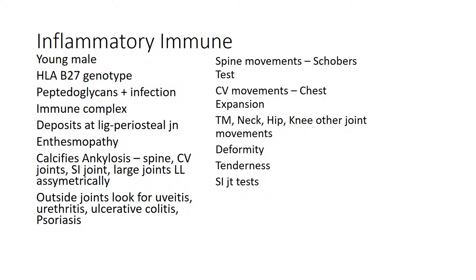Spine movements can be measured in the early stage by Schober's test, and costovertebral movements by chest expansion. You must also examine the temporomandibular joints, neck movements, hip, knee, and other joint movements. The deformity is usually a smooth curve involving many vertebrae, there is tenderness, and sacroiliac joint tests are positive.